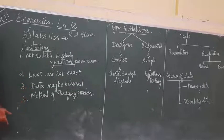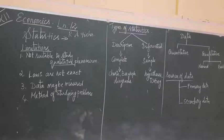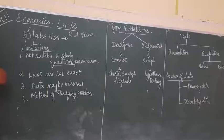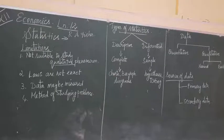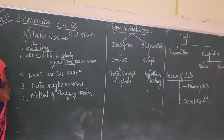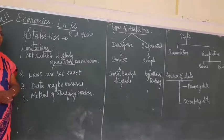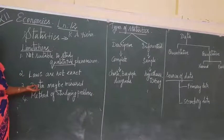The third limitation is that data can be misused. If data is collected by white-collar officers and used to make policies or bring changes in society or the economy, it will be used in the right manner. But the same data, if used by people who do not utilize it in the right way, there may be a chance it is used in the wrong way. So data can be misused — this is also one of the limitations.